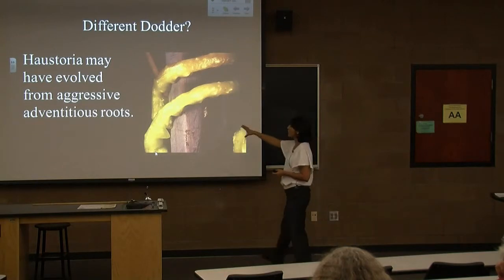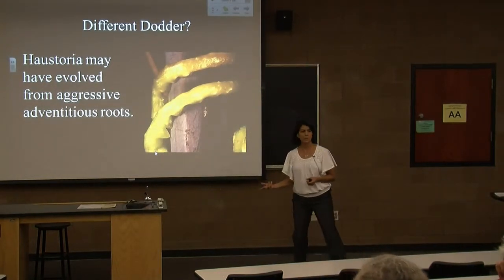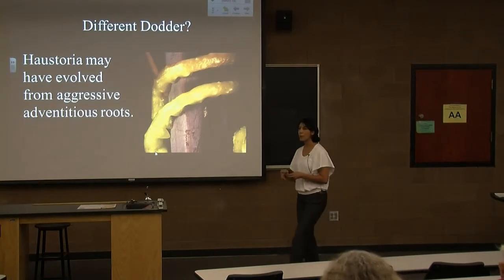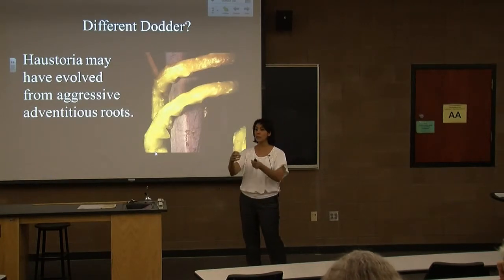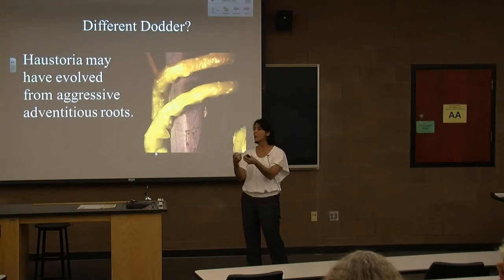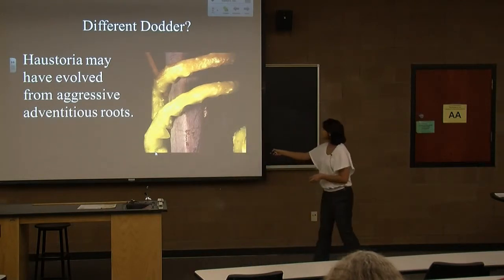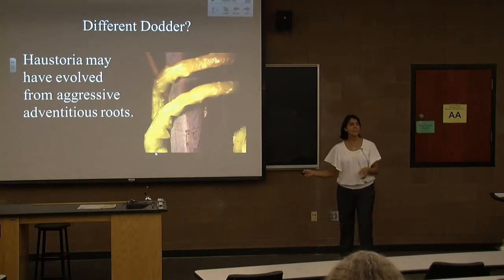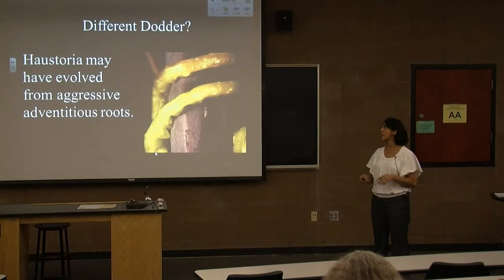They think haustoria probably evolved from adventitious roots. Adventitious roots are roots growing from the stem — like when you make a cutting of a plant and stick it in water to let roots grow. The idea here is that haustoria are adventitious roots gone wild, really getting out of control.